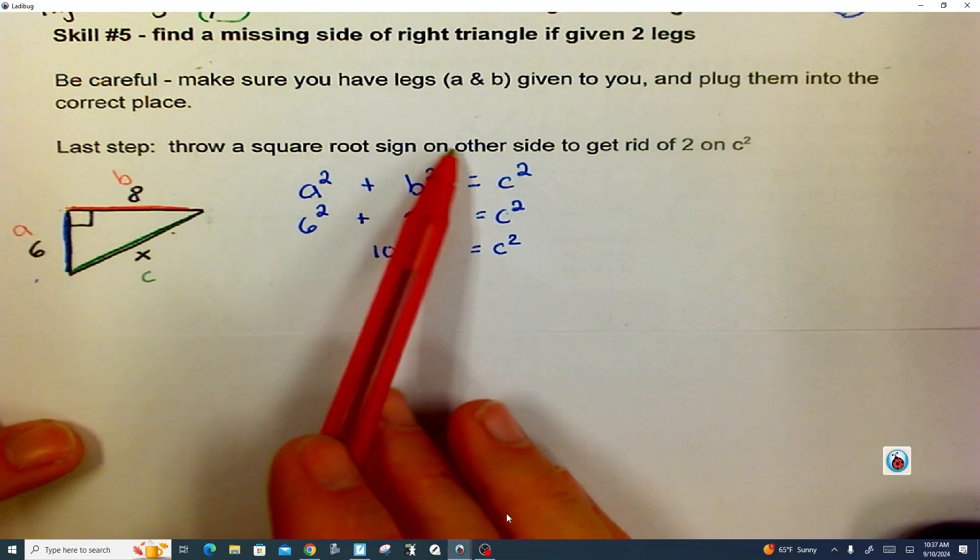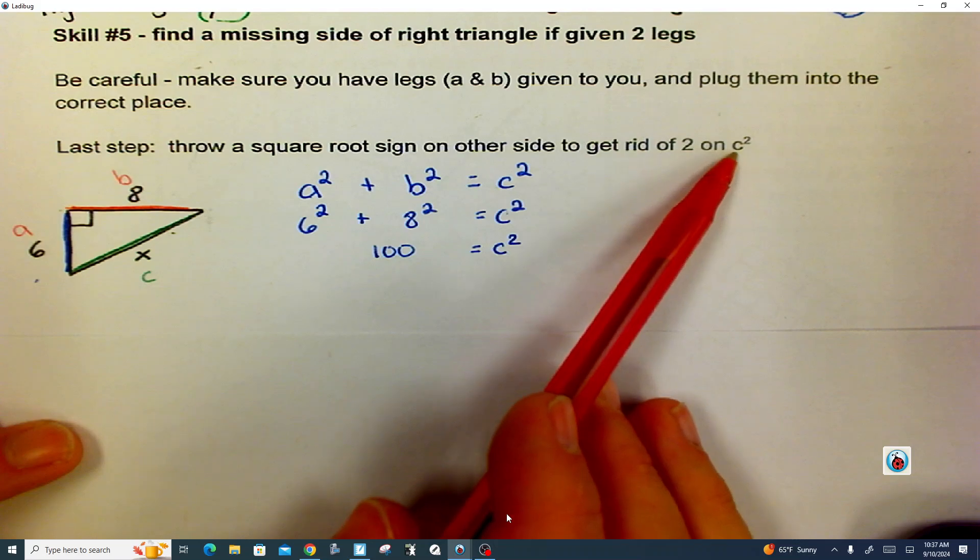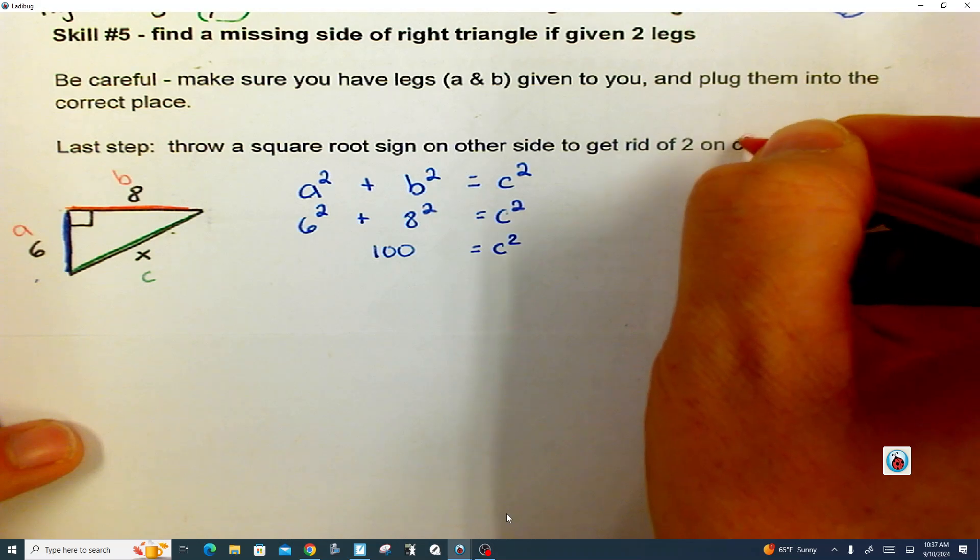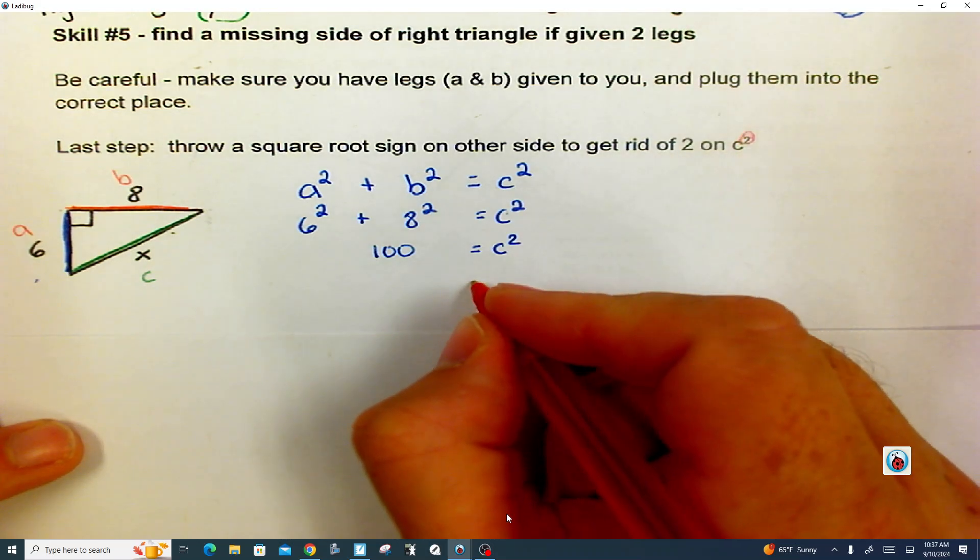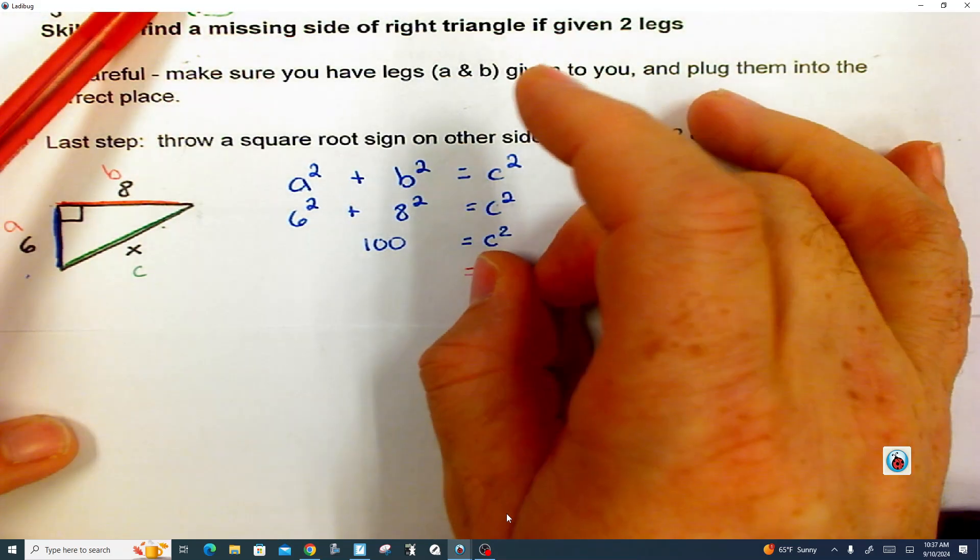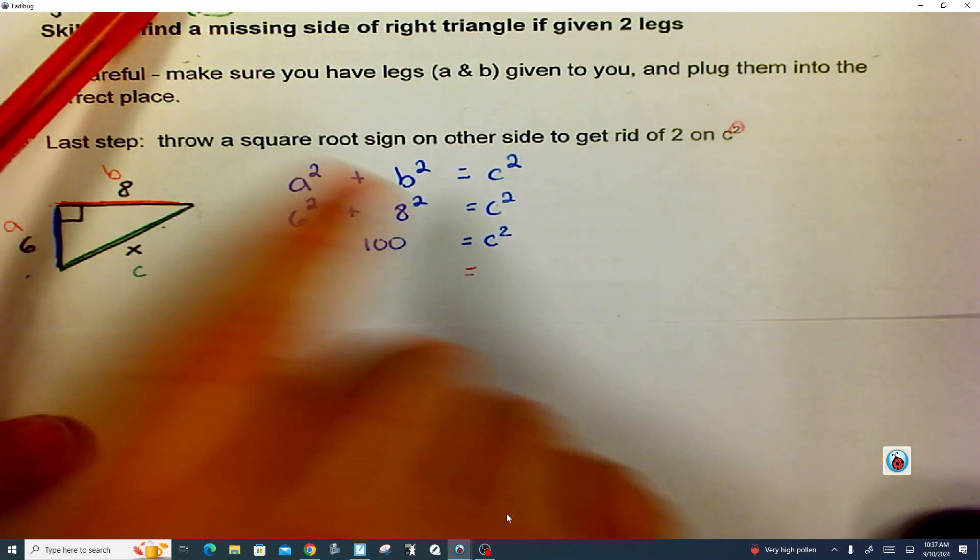The last step, throw a square root sign on the other side to get rid of two on C to the second power. We're trying to get rid of this little guy. So what are you talking about, Mr. Tate? Well, if you took your finger and you flicked, if you could imagine that you're just flicking the exponent and just knocking it onto the other side, it lands in a different form on this left side or the other side of the equal sign.